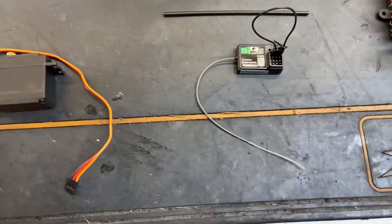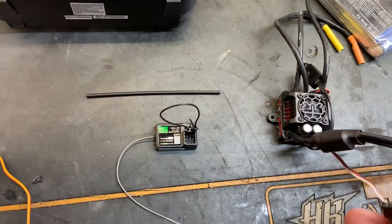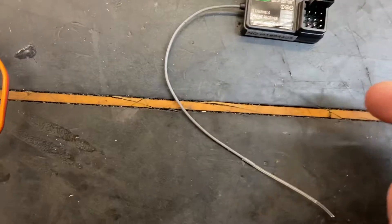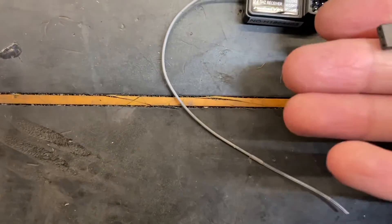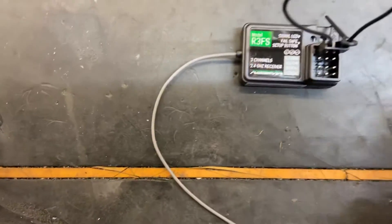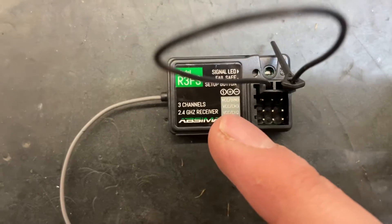Okay, so next if you use an electric model, the ESC wire goes in channel two. Make sure the polarity is correct as well, so the darkest wire, in this case the black wire, goes to the right hand edge of the receiver.